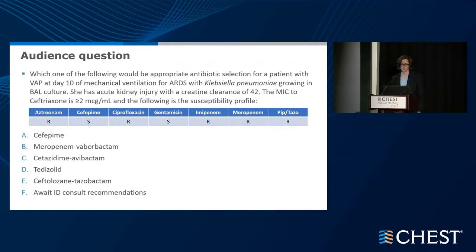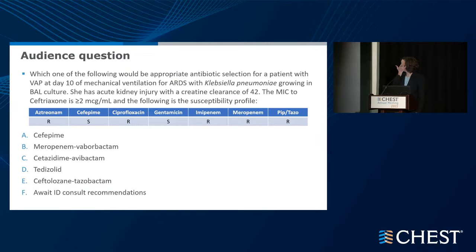An audience question: which antibiotic would be appropriate for a patient with VAP at day 10 of mechanical ventilation for ARDS with Klebsiella pneumonia growing in BAL culture? She has acute kidney injury with creatinine clearance of 42. The MIC to ceftriaxone is over 2. The susceptibility profile shows resistance to aztreonam, sensitive to cefepime, resistant to ciprofloxacin, sensitive to gentamicin, resistant to imipenem, resistant to meropenem, and resistant to piperacillin-tazobactam. Choices are cefepime, meropenem-vaborbactam, ceftazidime-avibactam, tedizolid, ceftolazone-tazobactam, or await ID consult.